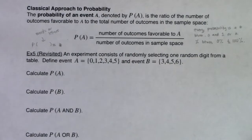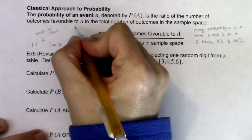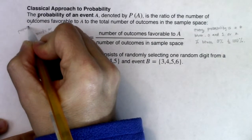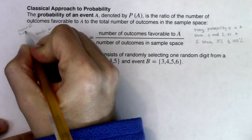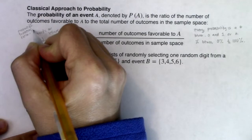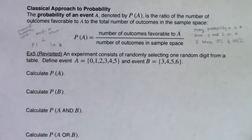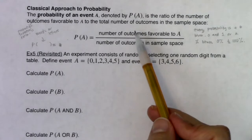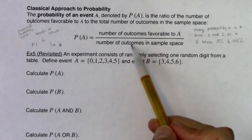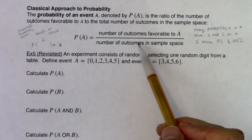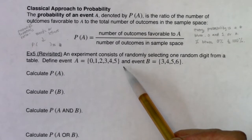When you hear probability, it's all those P words: it's a proportion, it's a fraction, it's a ratio, it's a relative frequency, it's a percentage. All of those numbers still apply here. We'll have a whole number on the numerator and a whole number on the denominator, but ultimately you owe me a number between zero and one — number of outcomes favorable to event A over number of outcomes in the sample space.